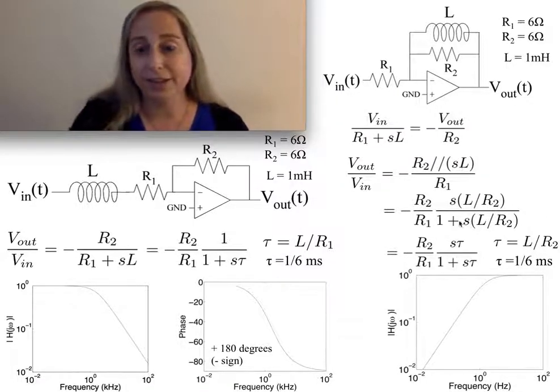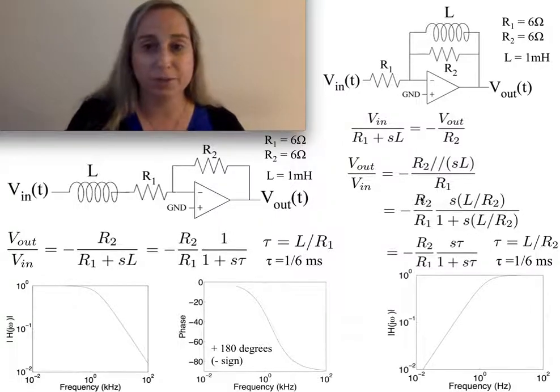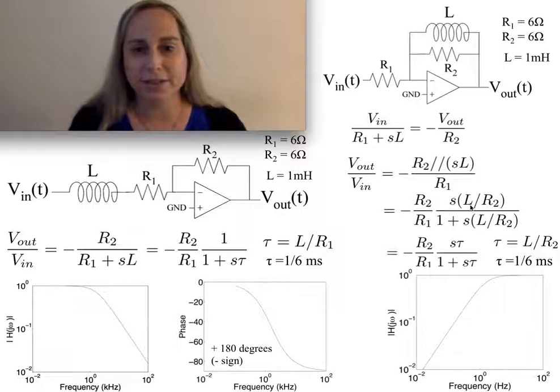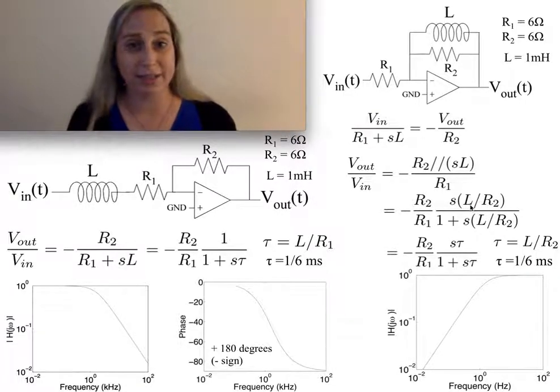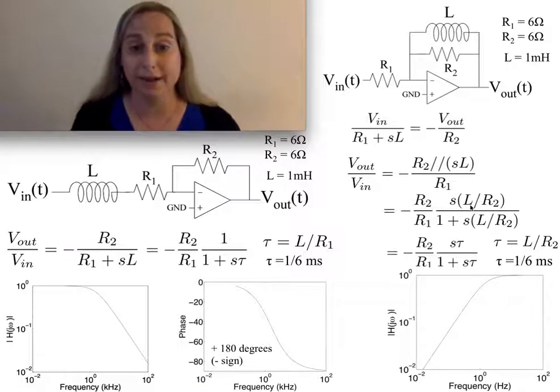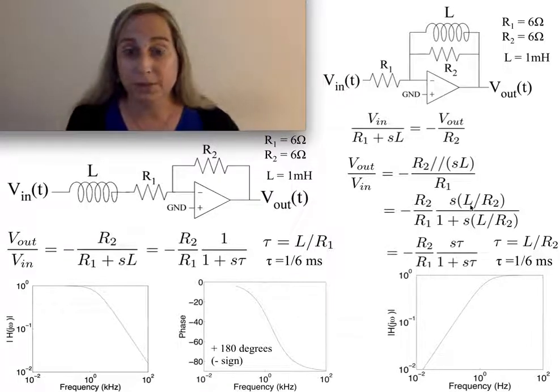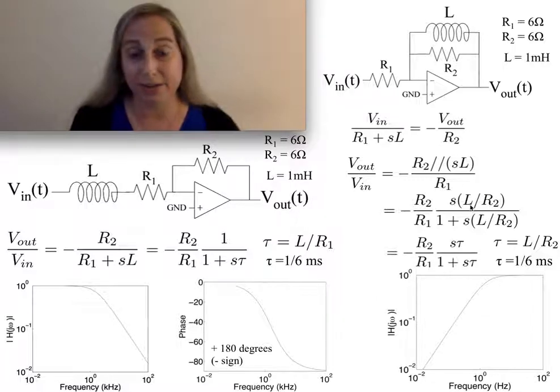A little bit of math gets me to R2 over R1, and then I see the time constants. Remember, the time constants fall out of what's happening in the math. It isn't something magical—you don't need special formulas. It's just what falls out of doing the analysis, and you might eventually see how to do this very quickly.